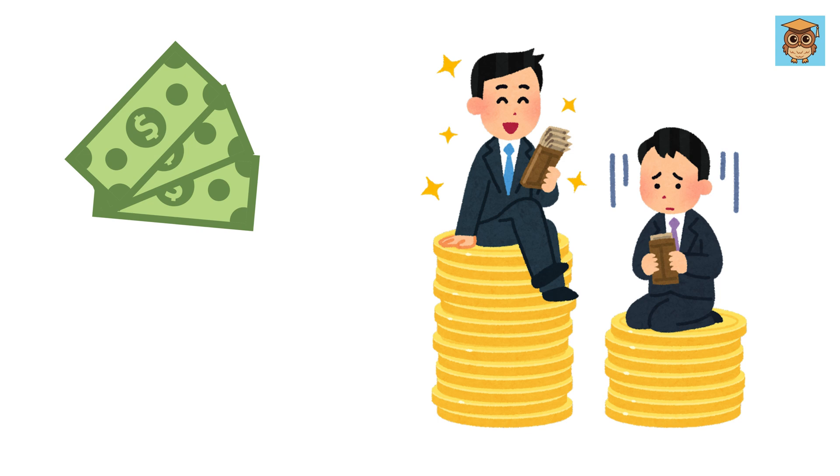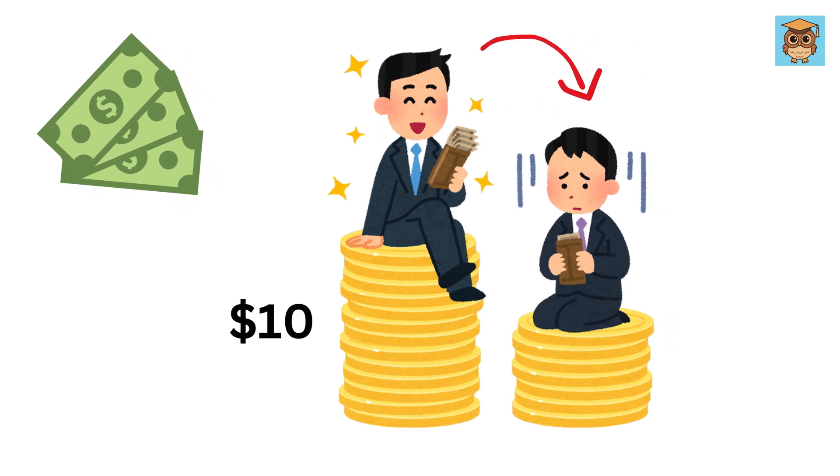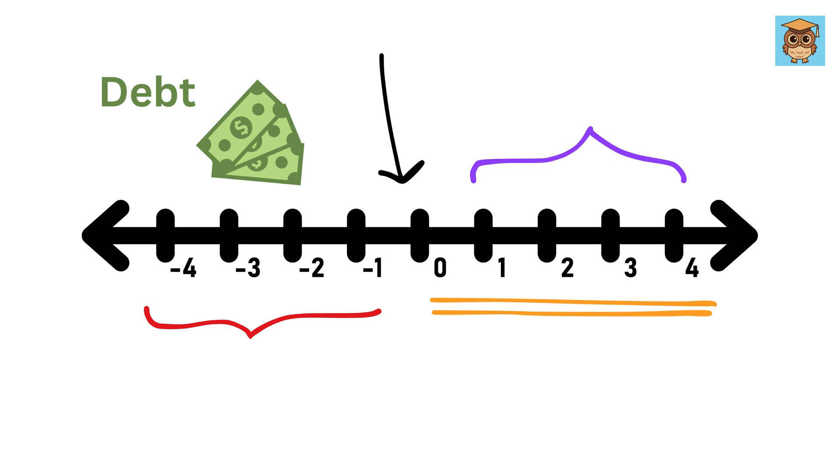For example, think about money. If you owe someone $10, you could think of it as having -$10. It shows that you're in debt or below zero in terms of money. I hope you are not. So, this is one way of thinking about negative numbers. But here is where the cool thing happens.